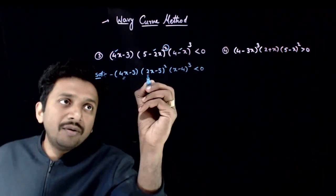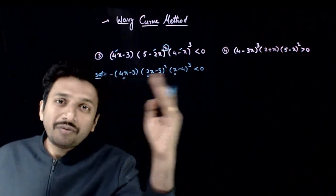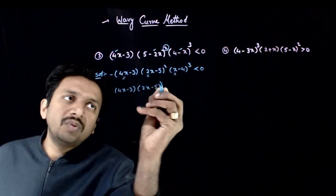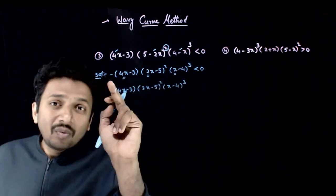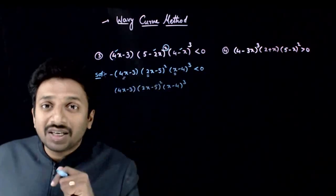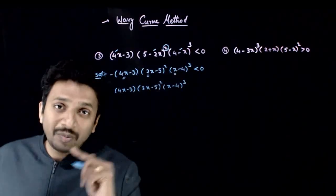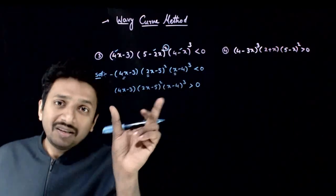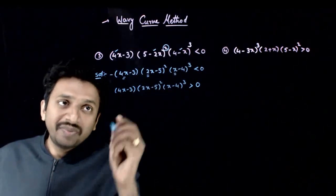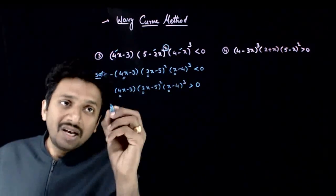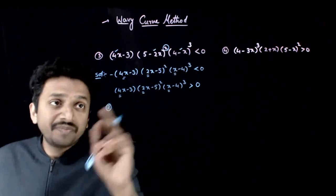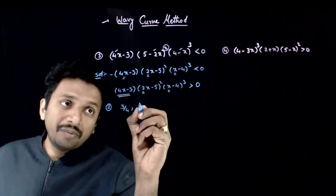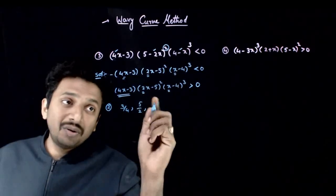Now all leading coefficients are positive, but we have an extra minus sign. Uniformly multiplying both sides by −1 gives: (4x − 3)(2x − 5)²(x − 4)³ > 0. Remember — when you multiply both sides of an inequality by a negative number, the sign of the inequality changes. This is very important. Now the first stage is done — all leading coefficients are positive. The critical points are: x = 3/4 (from 4x − 3 = 0), x = 5/2 (from 2x − 5 = 0), and x = 4 (from x − 4 = 0).